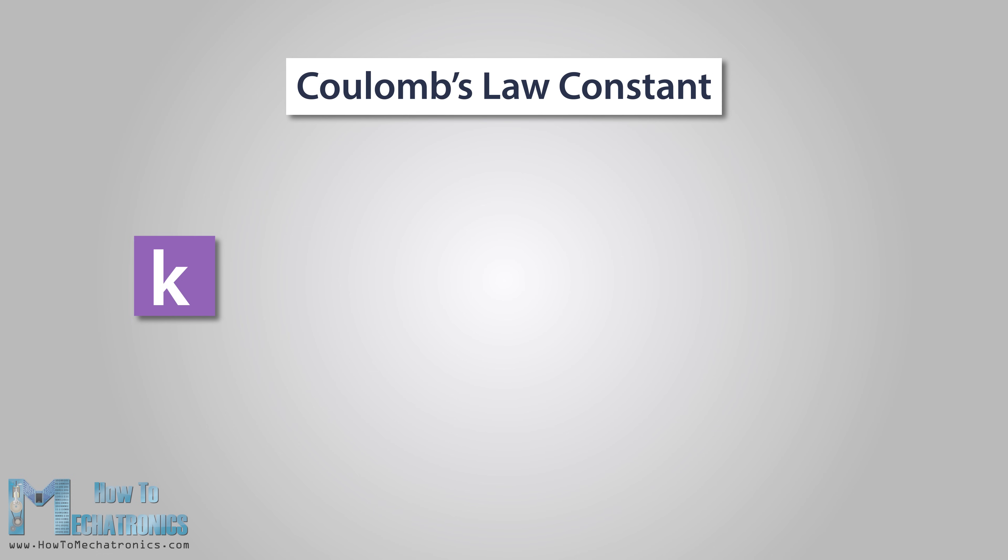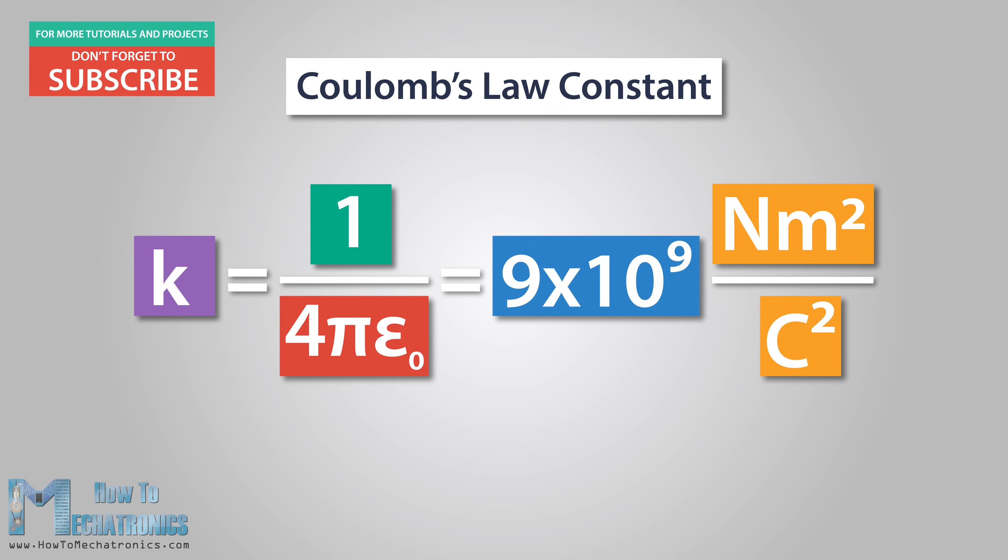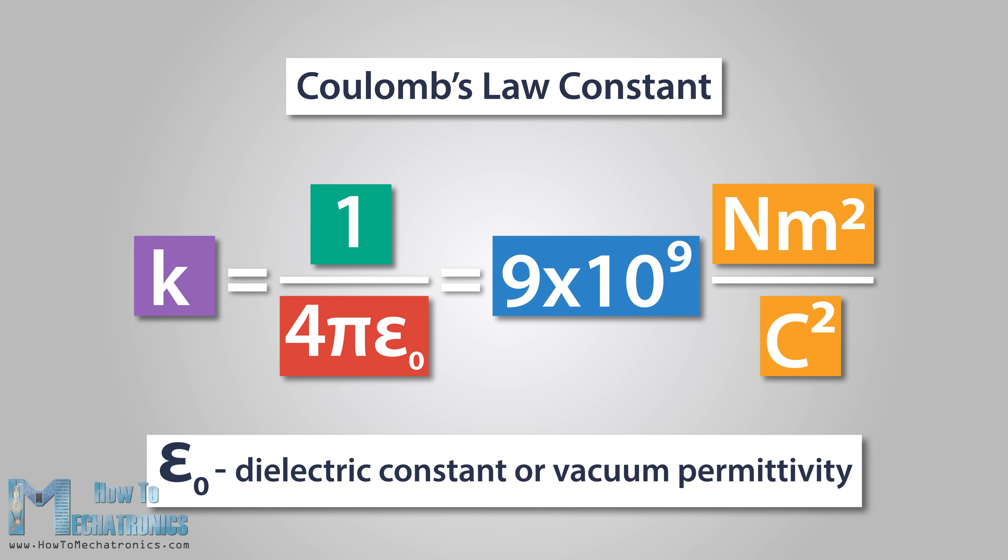The lowercase k is called proportionality constant or Coulomb's law constant. The value of this constant is dependent upon the medium in which the two objects reside. In the case of air, the value of the Coulomb constant is 1 divided by 4 pi epsilon naught, which is approximately 9 times 10 to the 9 newton meters squared per Coulomb squared. Epsilon naught is called the electric constant or vacuum permittivity.